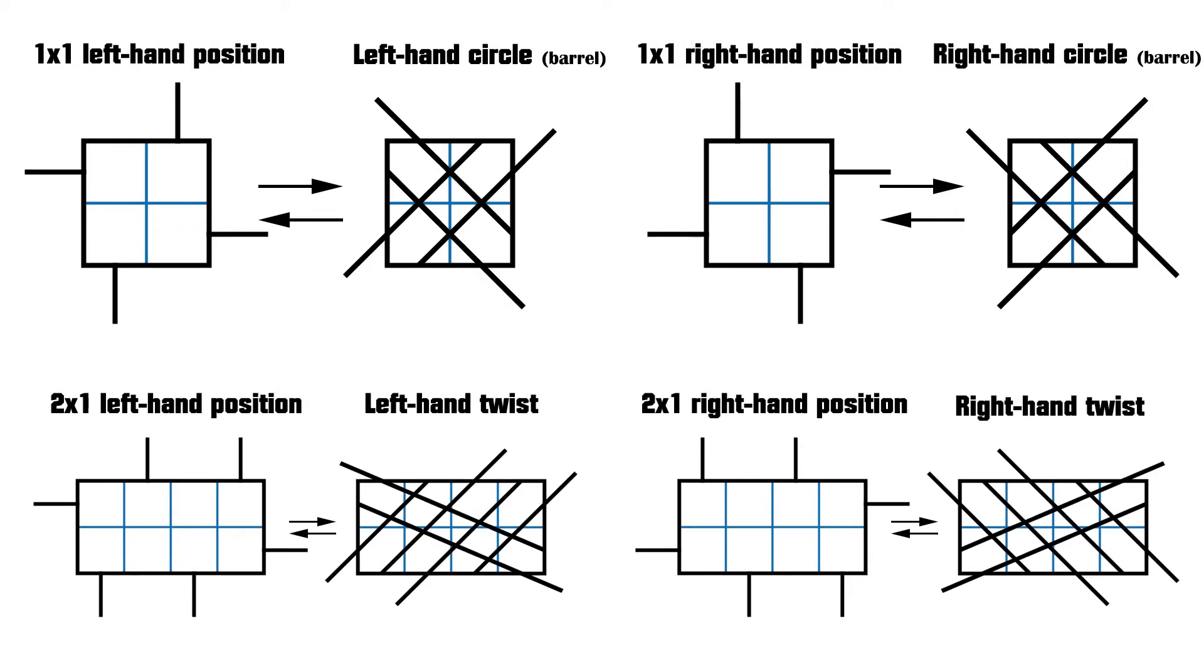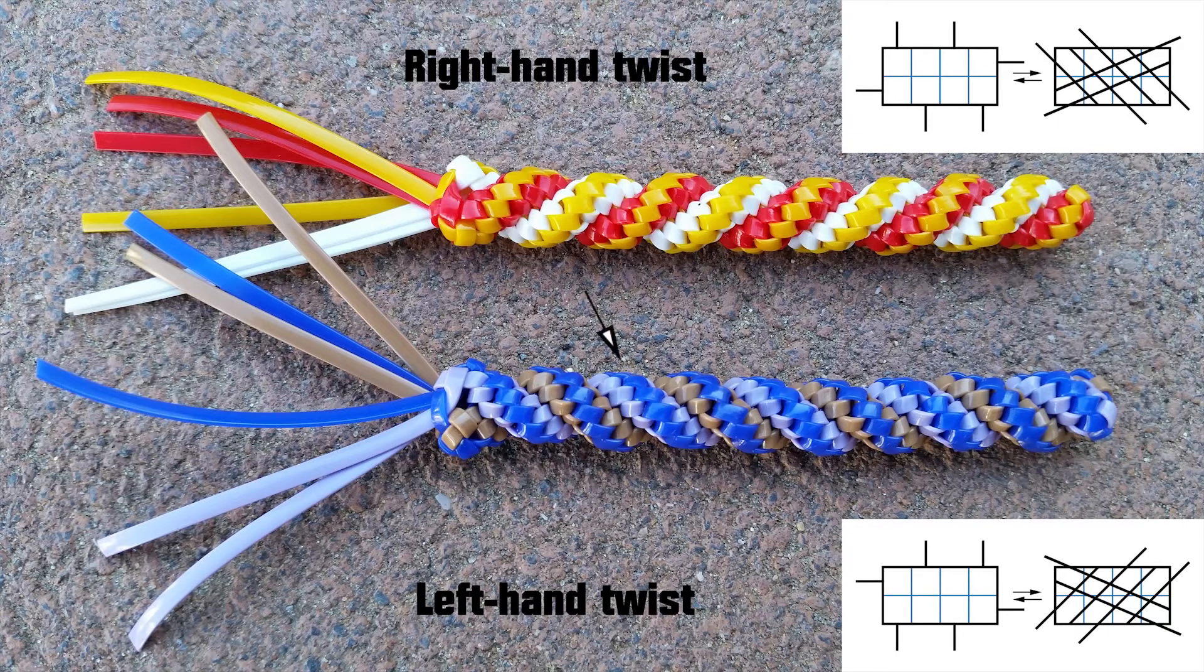The twist is very similar to a circle stitch, and that only one-handed orientation is involved, either make a right hand or make a left hand stitch. This means that we can make a twist stitch rotate clockwise, or if we choose the opposite handedness, it will rotate in the counterclockwise direction.